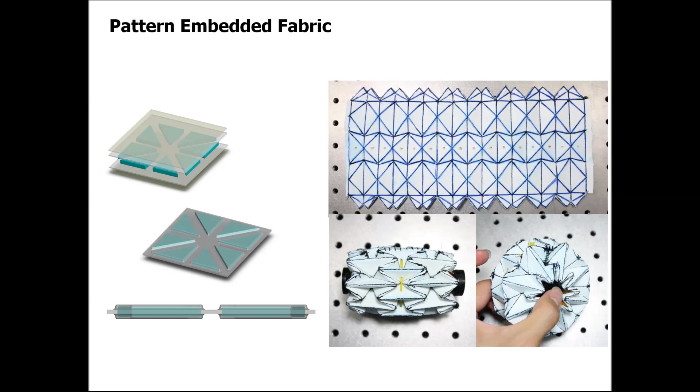In fabrication of the wheel, we designed pattern-embedded fabric for making a robust but foldable structure. This structure is composed of fabric, adhesive layer, and PVC segments. We enclosed the PVC segments with fabric, and the stitches are sewn around them so we can achieve a tough and foldable structure.